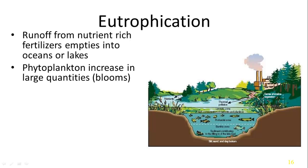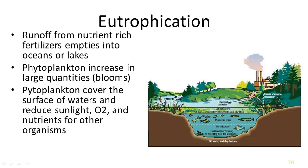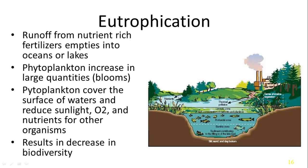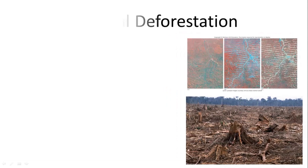Phytoplankton, given this increase in nutrients, rapidly reproduces and creates a bloom that covers the top layer of water. The bloom sucks oxygen out of the water and reduces other organisms' access to sunlight, oxygen, and nutrients, causing them to die. So you have an increase in phytoplankton biomass but a decrease in the overall biomass of other organisms.